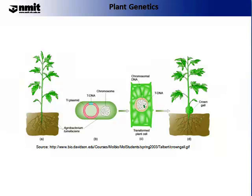This insertion of the genetic code of interest occurs randomly, so some cells will have it and some cells will not. Cells will multiply, producing a callus. You use antibiotics to select only the plants that have been transformed or that have the genetic material of interest. From these cells, you can then grow a whole transgenic plant, which will exhibit the trait of interest — for example, herbicide resistance. And this is the whole process of how Agrobacterium works.